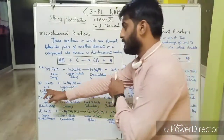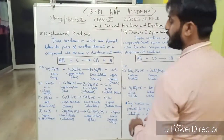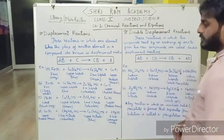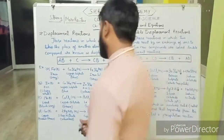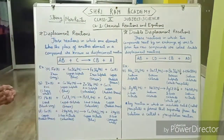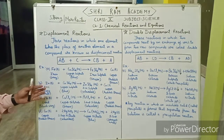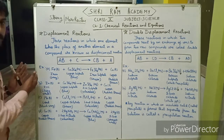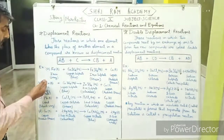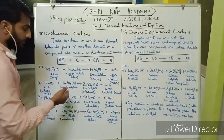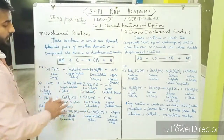Next is the second example — zinc reacts with copper sulfate, giving zinc sulfate and copper. The reaction is similar, but the difference is that the blue color of the copper sulfate solution is turning colorless. Zinc is more reactive than copper, so zinc replaces copper from the copper sulfate solution and forms zinc sulphate.